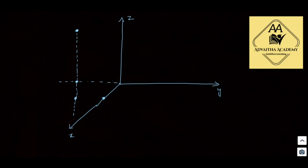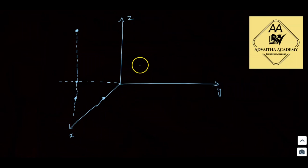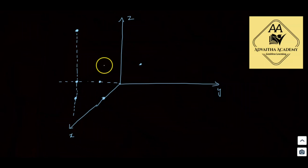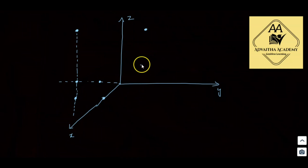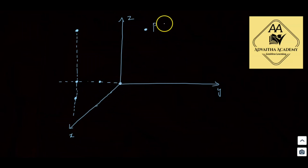The point of interest is at (minus 2, minus 1, 4). So z equal to 4 for the point of interest. This is our point of interest, P, at coordinates minus 2, minus 1, 4, where we want to find the electric field intensity.